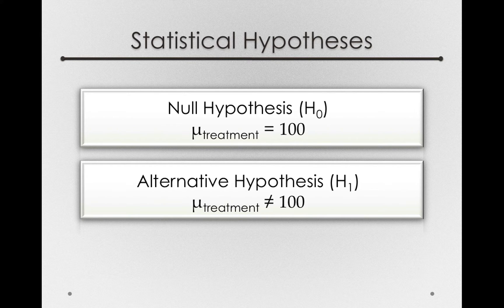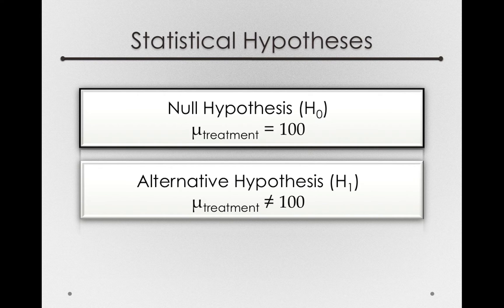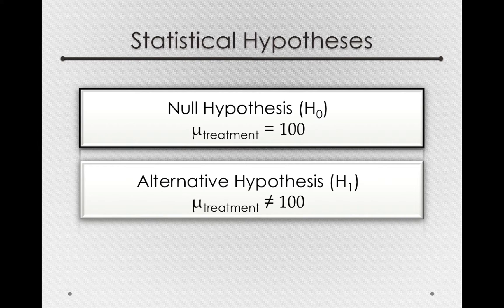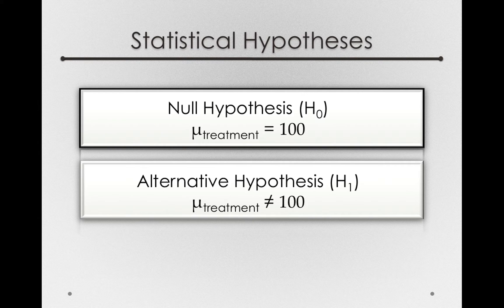So we need a hypothesis that we can discredit. And the null hypothesis makes a very specific claim that the mean of a population treated with ginseng will have a mean of exactly 100. And we know what types of sample means to expect if a population has a mean of 100.